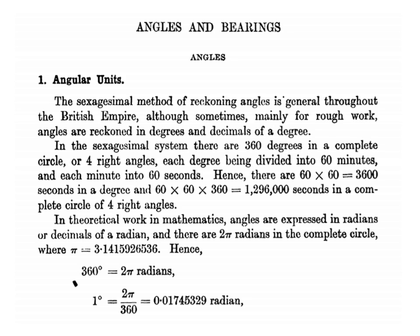In this slide we are going to see the angular units, specifically the sexagesimal method of recording angles which is used mainly in the British system for rough work. Angles are recorded in degrees and decimals of a degree. In this system there are 360 degrees in a complete circle or 4 right angles, each degree being divided into 60 minutes and each minute into 60 seconds.